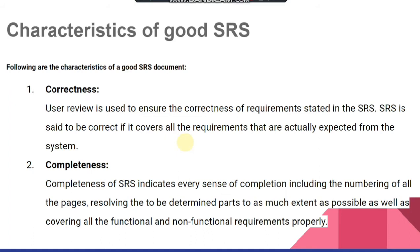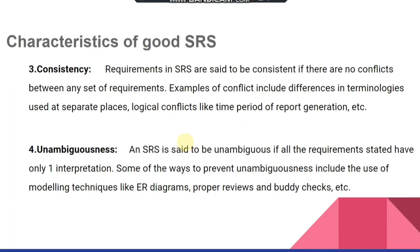The third characteristic is consistency. Requirements in SRS are said to be consistent if there is no conflict between the set of requirements. Examples of conflicts include differences in terminology used in separate places or logical conflicts like time periods for report generation. It is the responsibility of the developer to ensure the document is consistent — one word should have one meaning — so the user is fully satisfied.